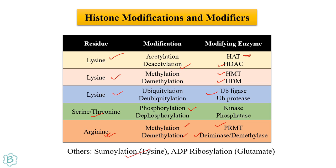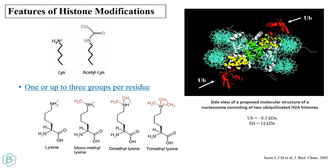Protein arginine methyltransferase and deiminase/demethylase are responsible for methylation and demethylation of arginine residues. For other modifications, sumoylation can happen to lysine and ADP ribosylation can happen to the glutamate residue of histone.